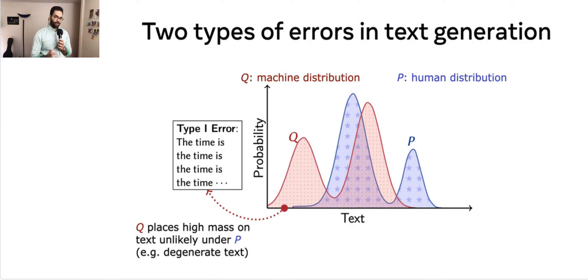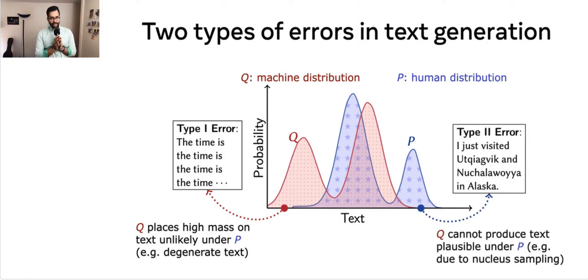The first one, which we call the type 1 error, happens when the model Q places high mass on text which is unlikely to be written by humans. This could happen, for instance, if the model tends to generate degenerate or highly repetitive text. The second type of error, which we call the type 2 error, happens when the model Q cannot produce legitimate human written text. This could happen because of truncation heuristics used by state-of-the-art decoding algorithms such as nucleus sampling.